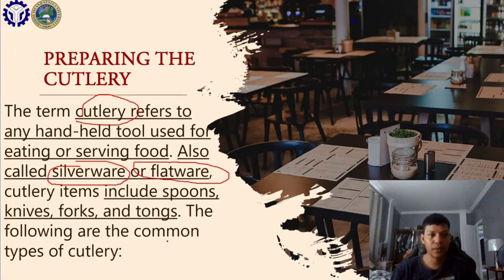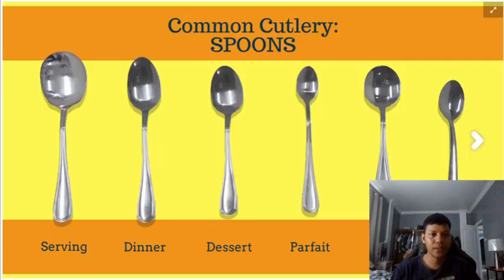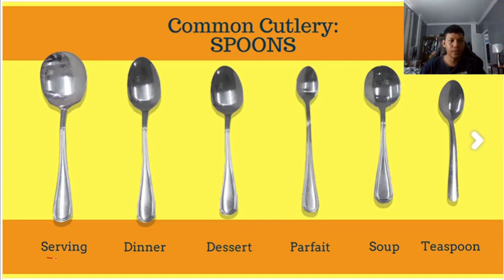I will show you examples of the common types of cutlery spoons. We have six types: serving spoon, dinner spoon, dessert spoon, parfait spoon, soup spoon, and teaspoon. For example, in a family-style meal, we use the serving spoon to get rice from a platter and transfer it to our dinner plate.